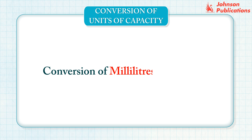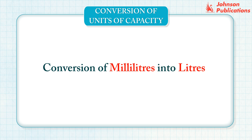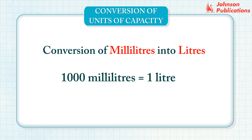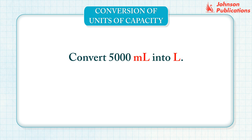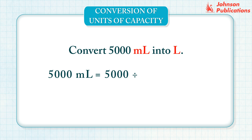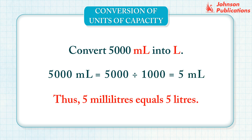Let us learn the conversion of milliliters into liters. We know that 1,000 milliliters equals 1 liter. To convert milliliters into liters, divide the milliliters by 1,000. Let us convert 5,000 milliliters into liters. Divide 5,000 milliliters by 1,000. Thus, 5,000 milliliters equals 5 liters.